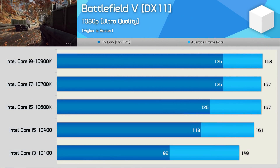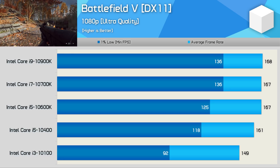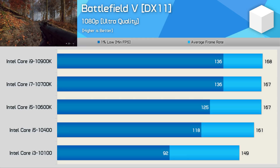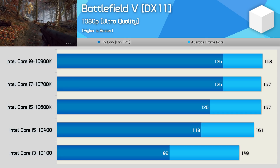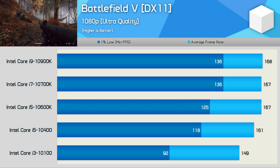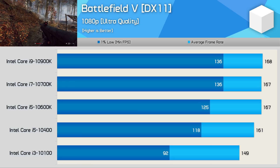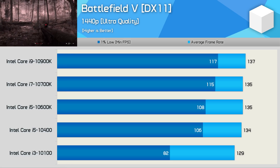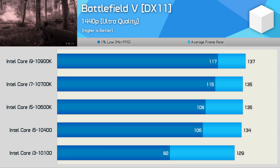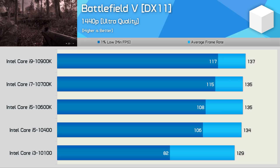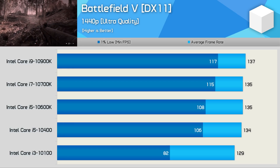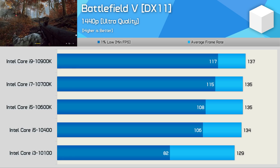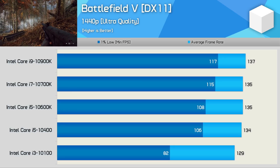In Battlefield 5 at 1080p with the ultra quality preset, the 10700K and 10900K are both GPU limited and deliver the same average and 1% low performance. The 10600K matches the average frame rate but slips 8% for the 1% low, with a further 6% decline for the 10400, and then a rather large 22% drop with the 10100. However, increasing the resolution to 1440p reveals very little difference between the 10400, 10600K, 10700K, and 10900K, with virtually identical average frame rates, though the 10900K is nearly 10% faster than the 10400 in 1% low performance. The Core i3 10100 still trails by a noticeable margin at 1440p.